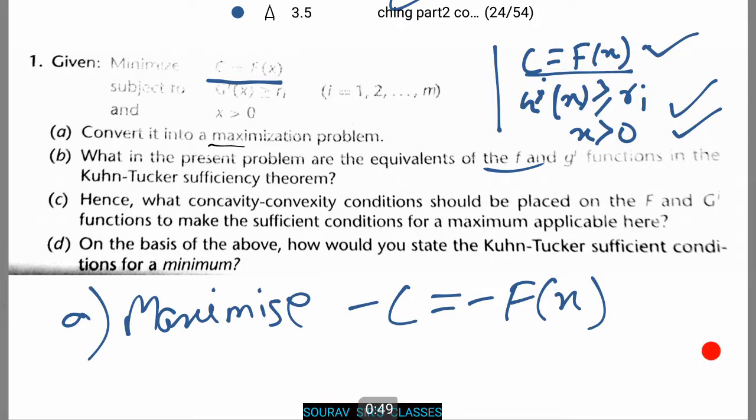Now we will do the same for the constraint also. That is minus g to power ix less than or equal to ri. Notice the inequality has changed since we have multiplied a negative number on both sides. For x, it will just change to an equality sign: x is greater than or equal to 0.